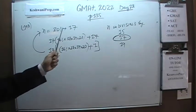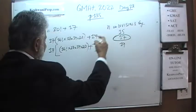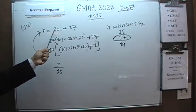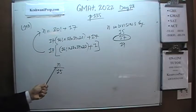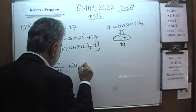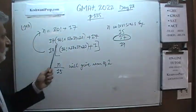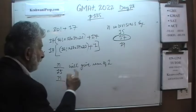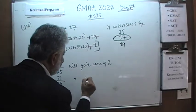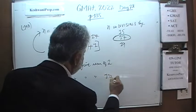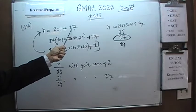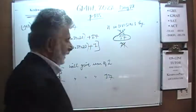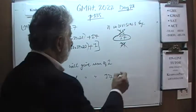What happens if we try to divide n by 15? 20 factorial is a multiple of 15 because it has 15 in it, but then we have a 17. If we try to divide n by 15, it will give us a remainder of 2, because when we divide 17 by 15, we get a remainder of 2. So it's not divisible by 15. Similarly, if we try to divide n by 19, this gives a remainder of 17, because 20 factorial is divisible by 19 but 17 is not. Hence, n is divisible by 17 but not 15 or 19. The answer is 2 only.